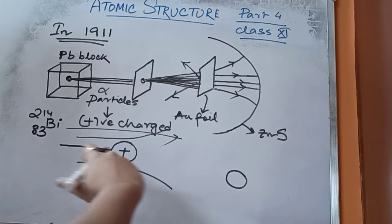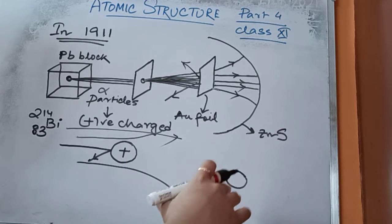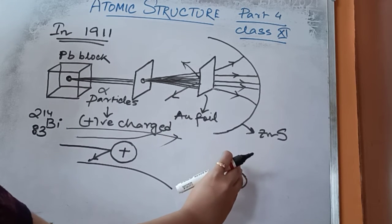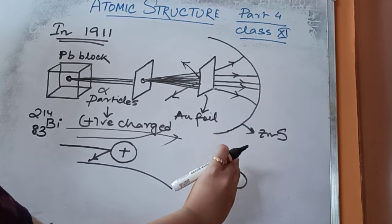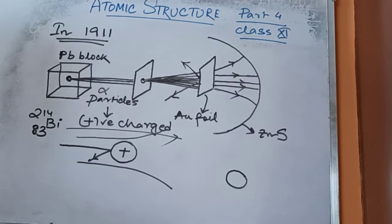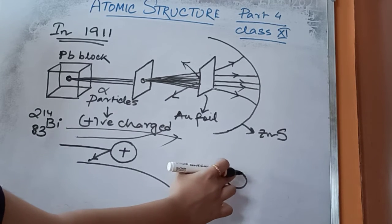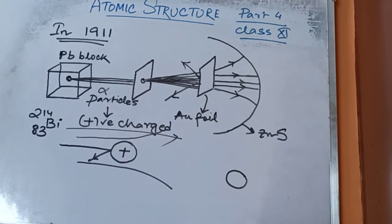Since maximum rays are passing undeflected, it means that this heavily positively charged part is a very small part of the atom. Almost the entire mass of the atom is concentrated at this nucleus. The positive charge is entirely present inside this part.